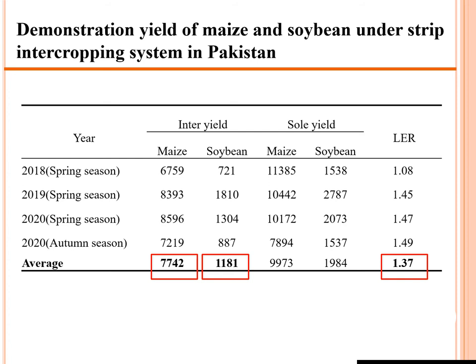Demonstration trials of maize-soybean strip intercropping were conducted in Pakistan for 4 seasons. The average intercropping maize yield was 7.7 tons per hectare and soybean yield was 1.2 tons per hectare. Compared to sole cropping yields of 9.9 tons for maize and 1.9 tons for soybean, the average LER achieved in Pakistan was 1.37. This is slightly lower than China because China has intercropping-specific maize and soybean varieties, while Pakistan does not yet have these specific varieties.